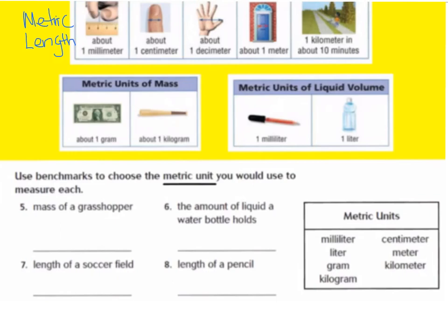Now we're going to talk about the metric system. In other countries, when they measure length, height, weight, or liquid volume, they use the metric system. Here in the United States we use customary units, but it's very important that we know both. In science, you mostly use the metric system as well. For metric units of length: one millimeter is very, very small — on your ruler, there are ten tiny lines from one centimeter to the next, and one of those lines is a millimeter.